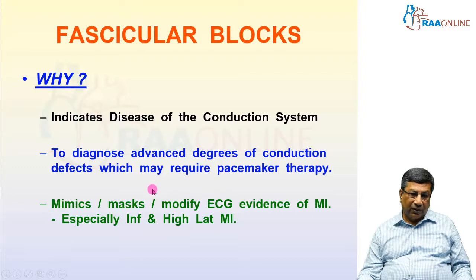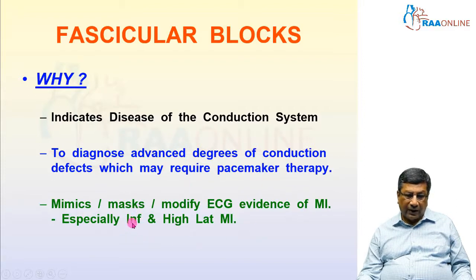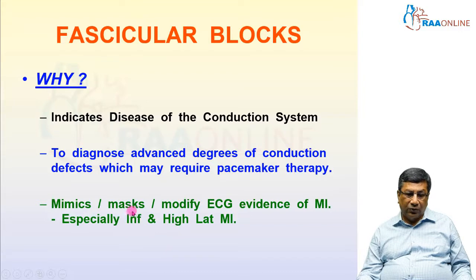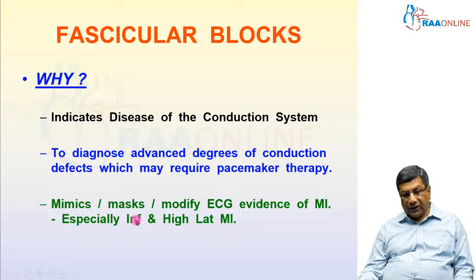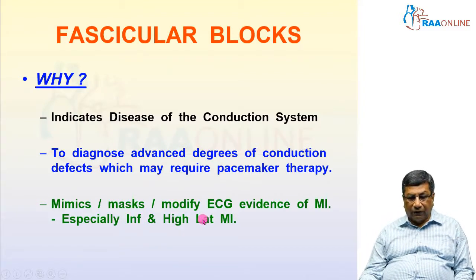Another important reason to know about fascicular block is that it can mimic, mask, or modify the ECG changes of myocardial infarction — especially inferior MI and high lateral MI. Because fascicular blocks produce changes in axis, and as discussed in the axis lecture, axis changes affect only the limb leads. The two infarctions seen in limb leads — inferior and high lateral — can therefore be masked, mimicked, or modified by an associated fascicular block, making diagnosis difficult.